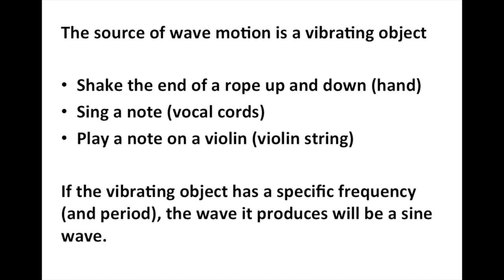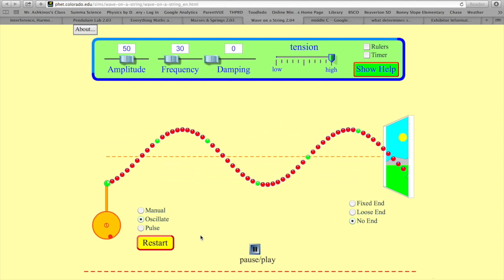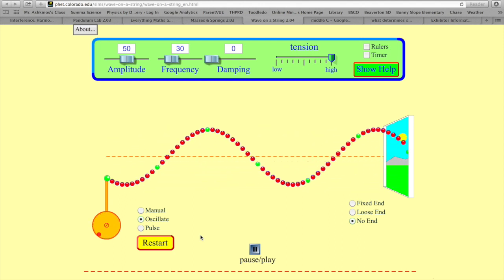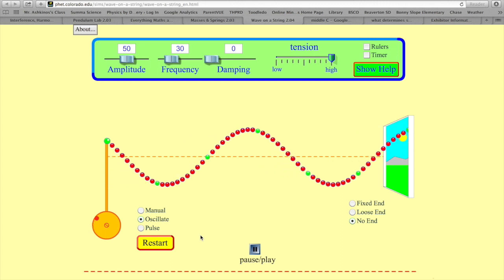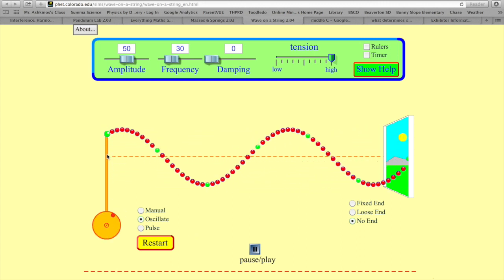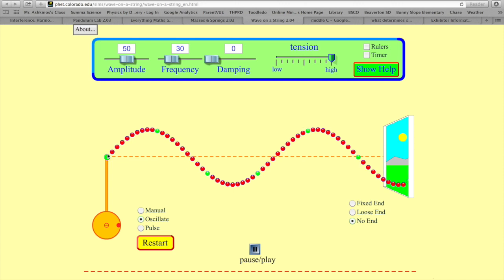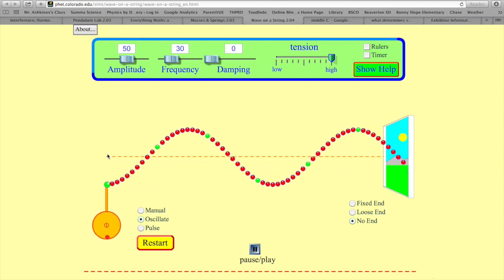If the vibrating object has a specific frequency and period, the wave it produces will be a sine wave. I've included both words frequency and period here because those two quantities are reciprocals of each other. We can see here that the shape of the wave is actually looking very much like a sine wave, and that's occurring because this vibrating object has a very specific repetitive period.